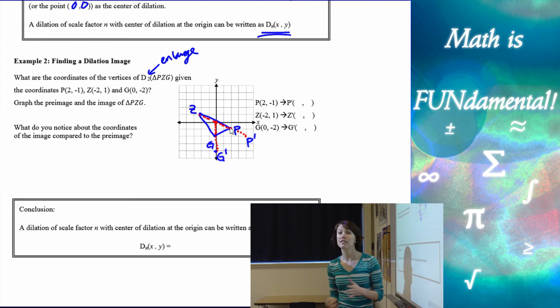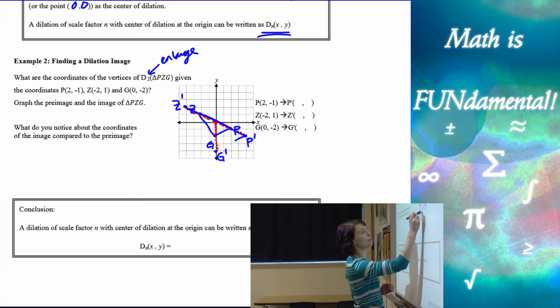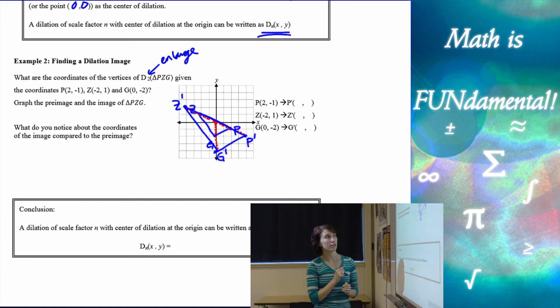And then from my origin to my point, and then we have to double that distance. So up 1 over 2. I'm going to go up 1 over 2 and double the distance to get to my Z prime. So here is, and it's going to overlap a bit, but here is my image of that figure.